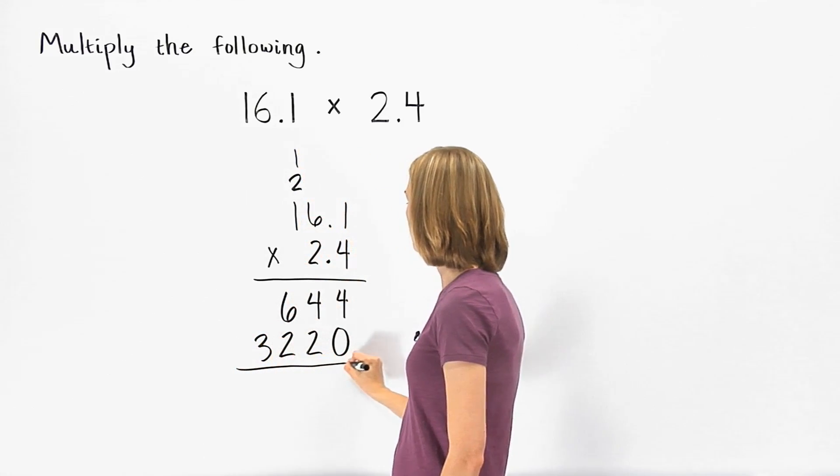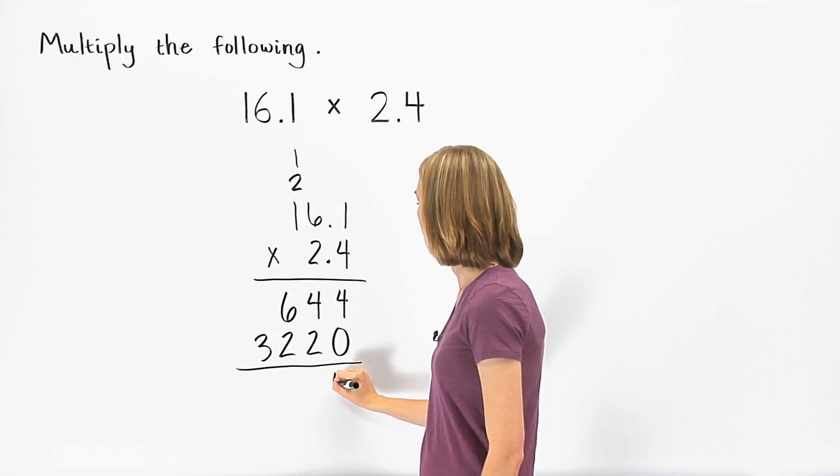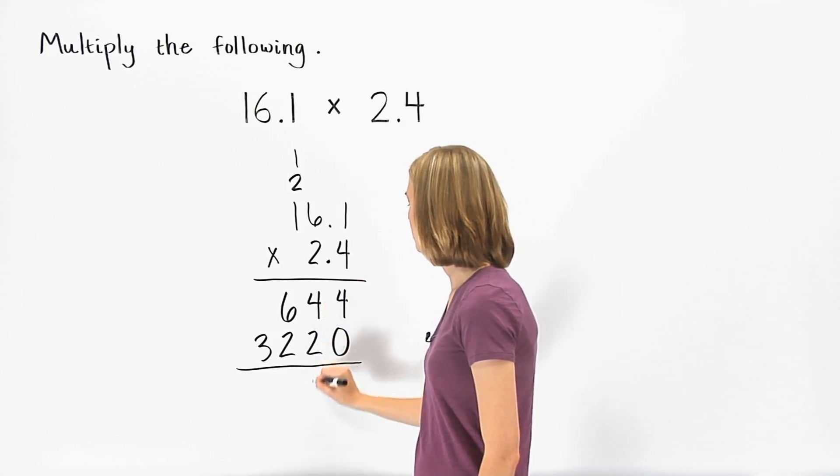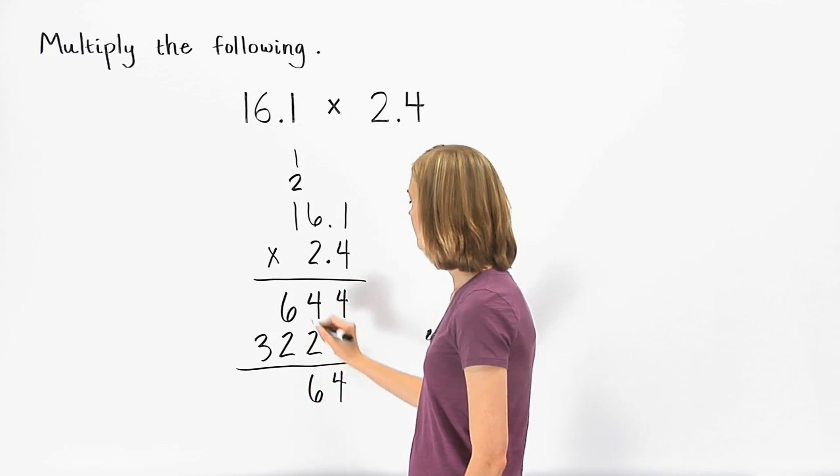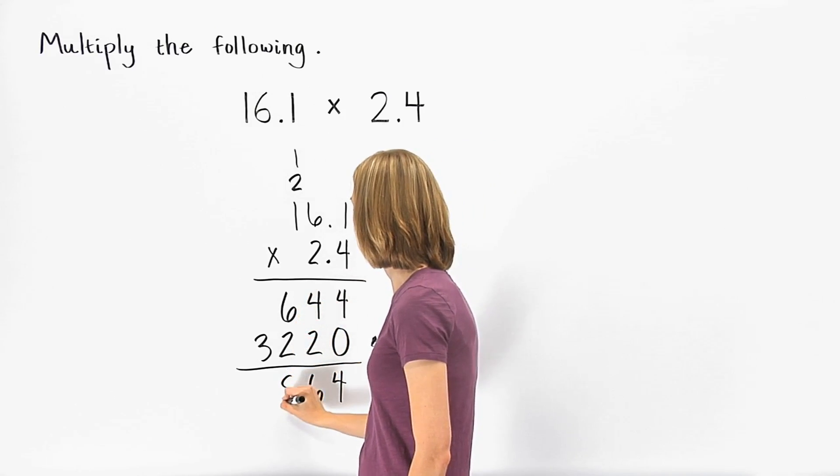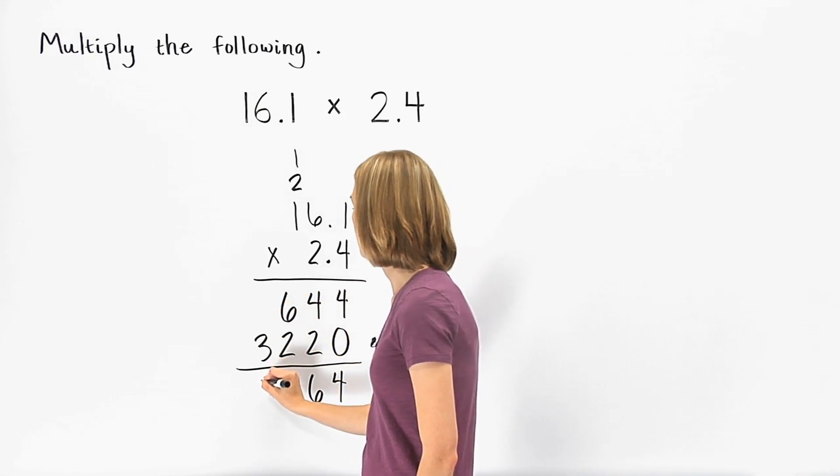Now we add the two rows together. 4 plus 0 is 4. 4 plus 2 is 6. 6 plus 2 is 8. And 0 plus 3 is 3.